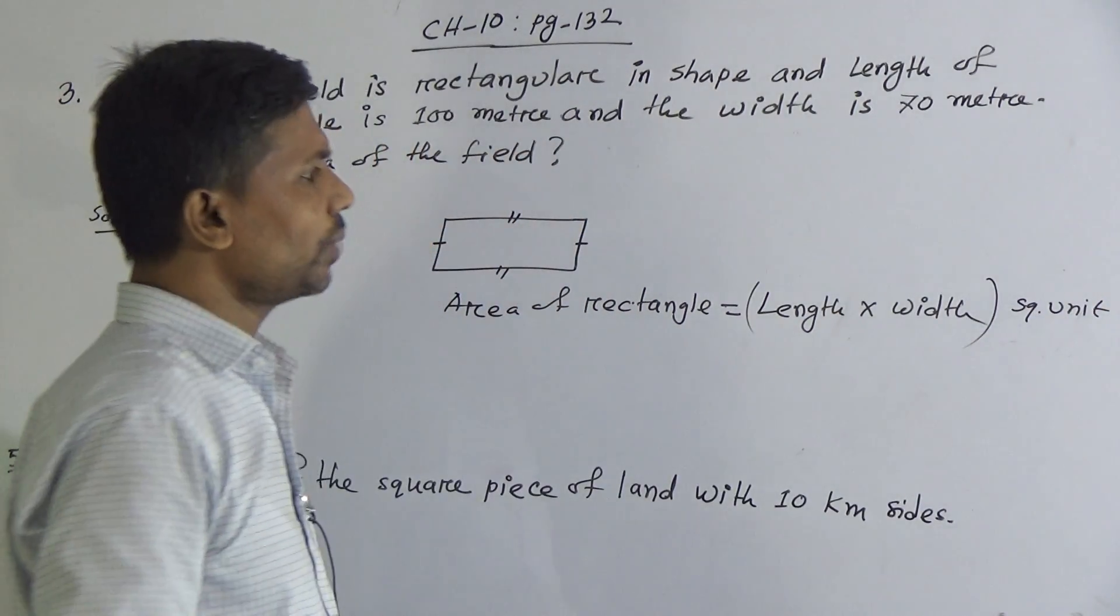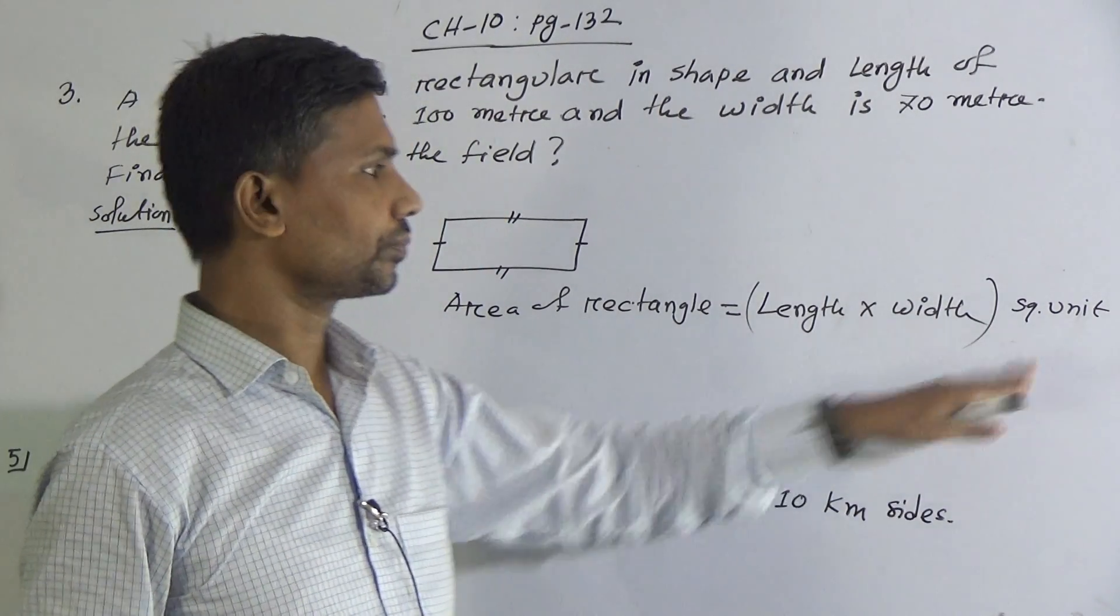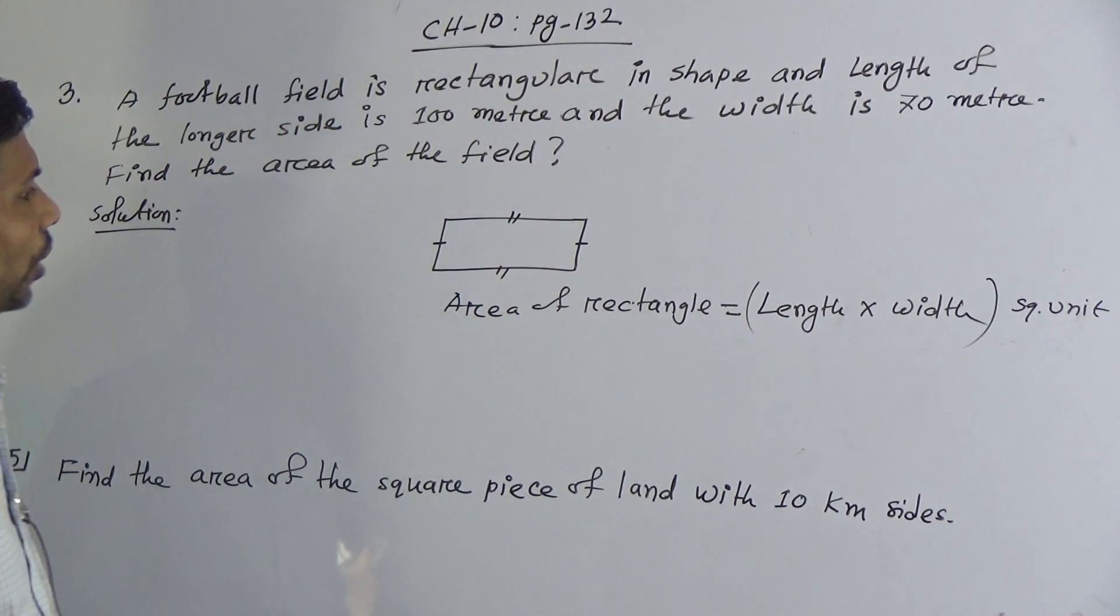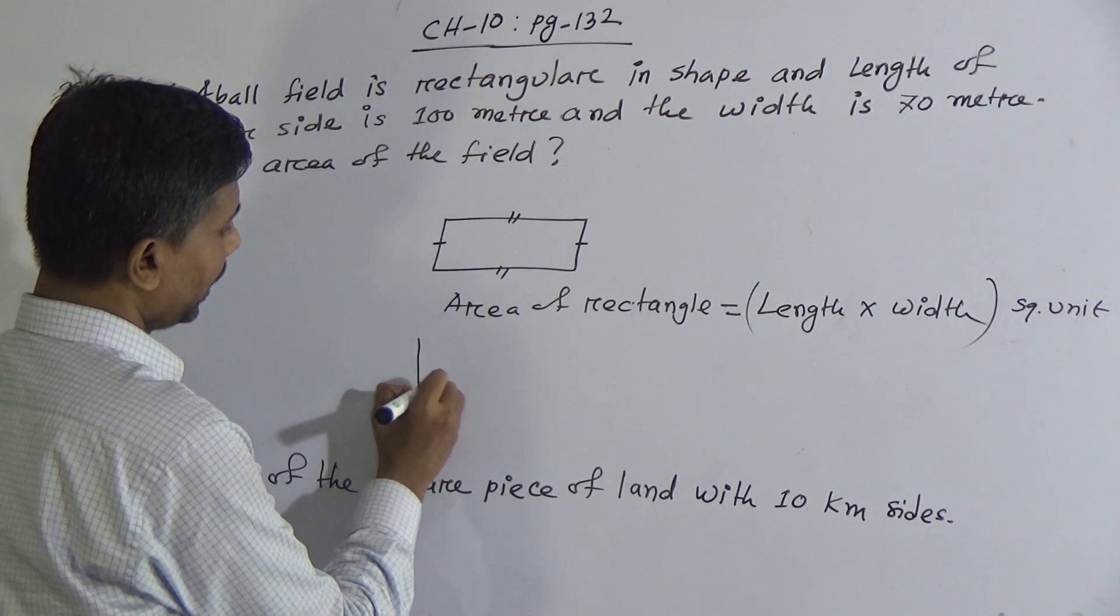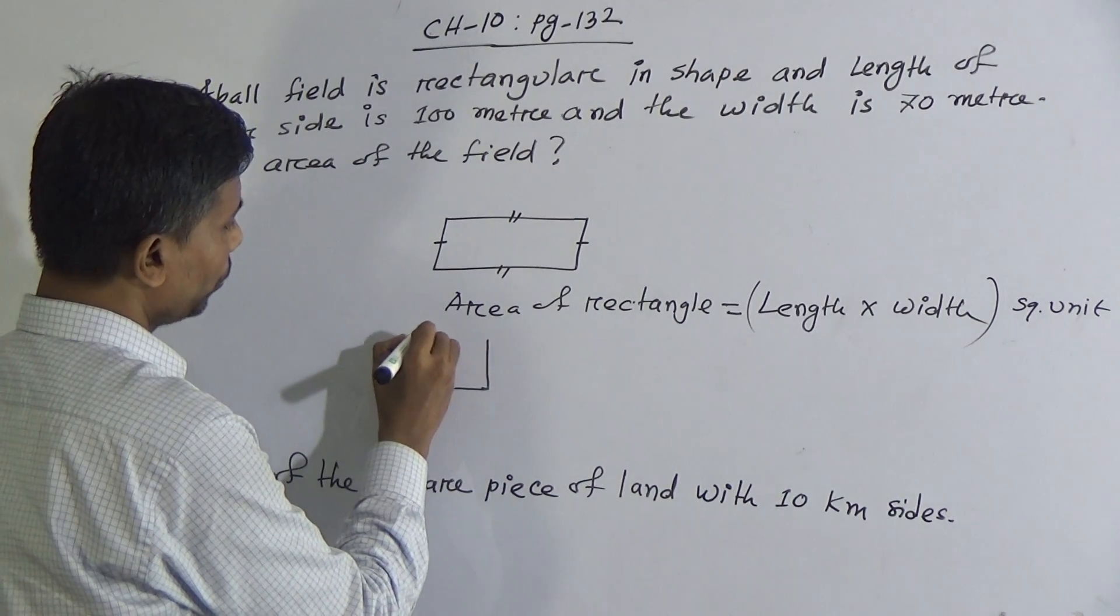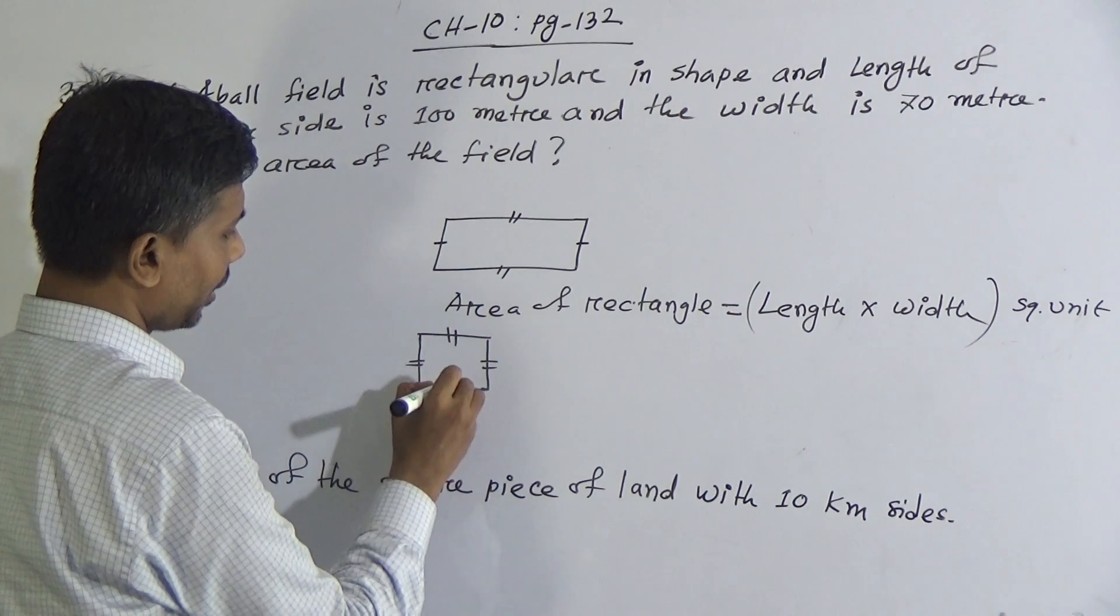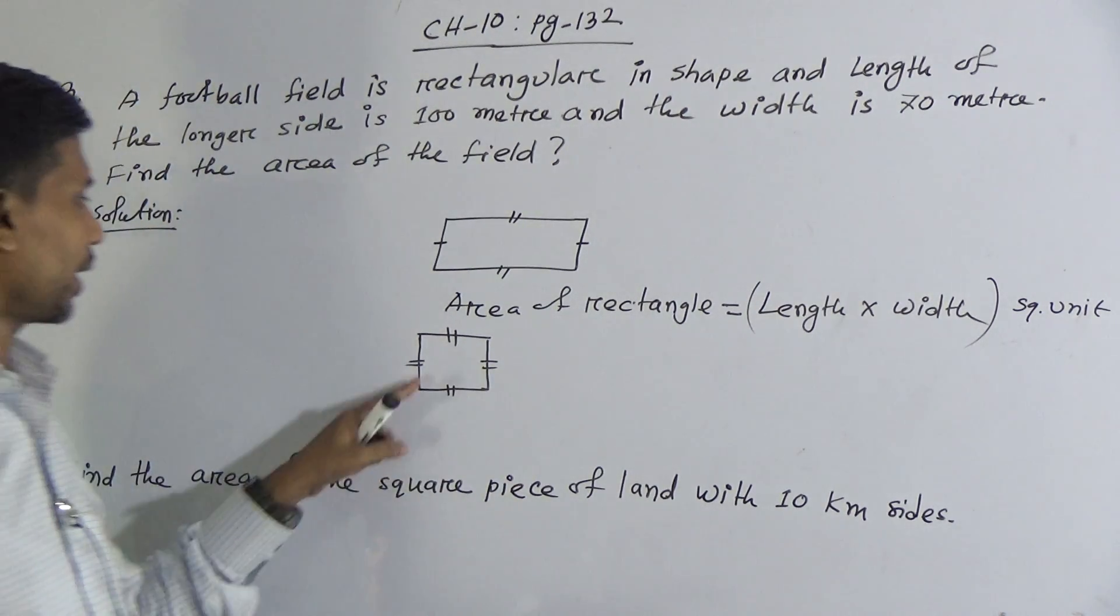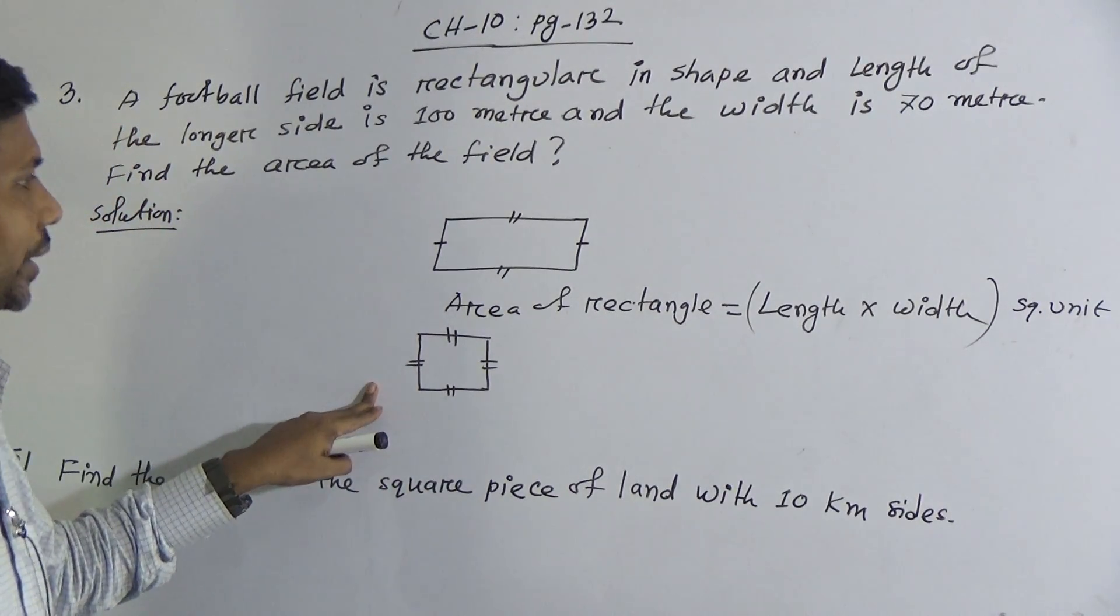It may be square centimeter, square kilometer. Now I will write the formula of square. You see, square means what - in a quadrilateral whose all the sides are equal and every angle is 90 degree. This is called square.